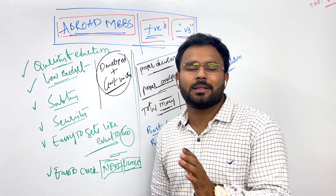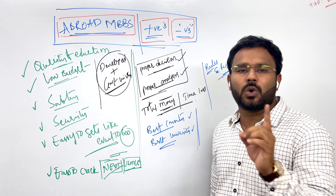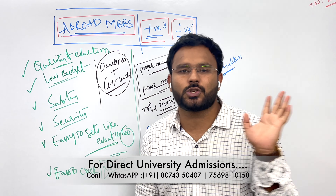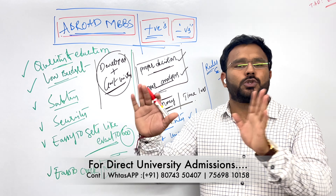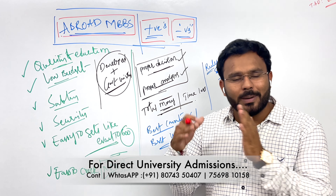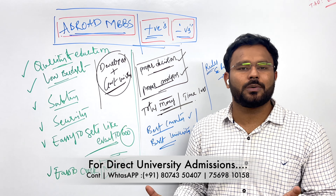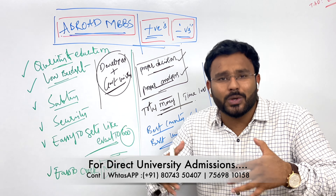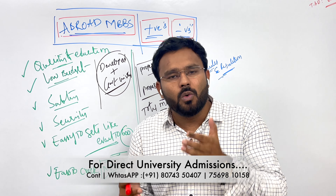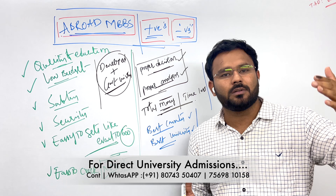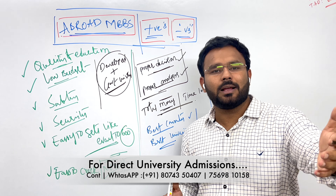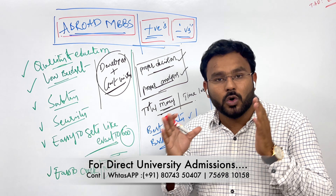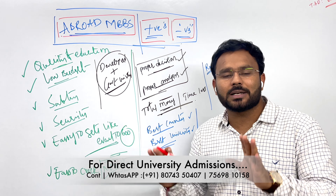Talking about positive points: whenever you choose a country, one government university is mandated. Low budget, high quality of education, security, and easy to get admission — these are the key benefits. If you score around 150 equivalent marks, government universities are 100% positive for your MBBS admission.